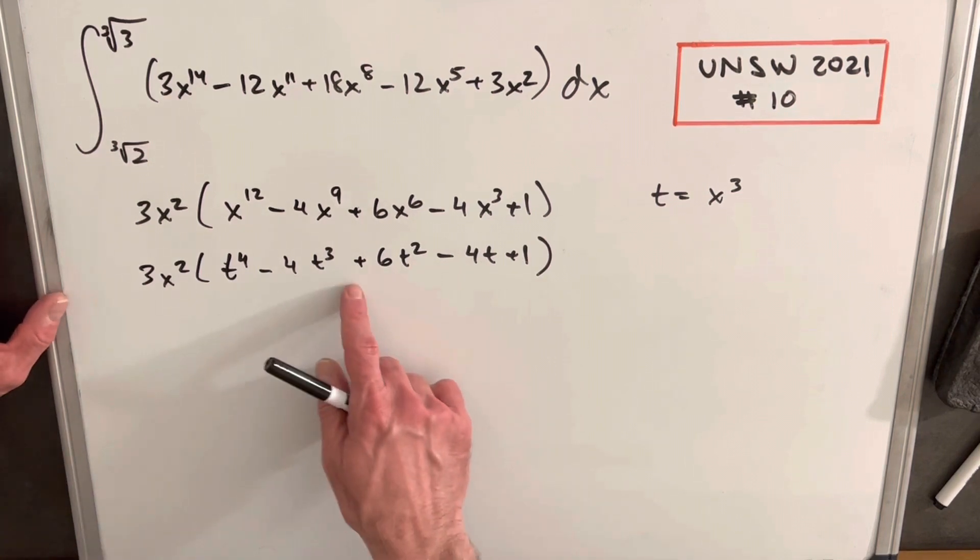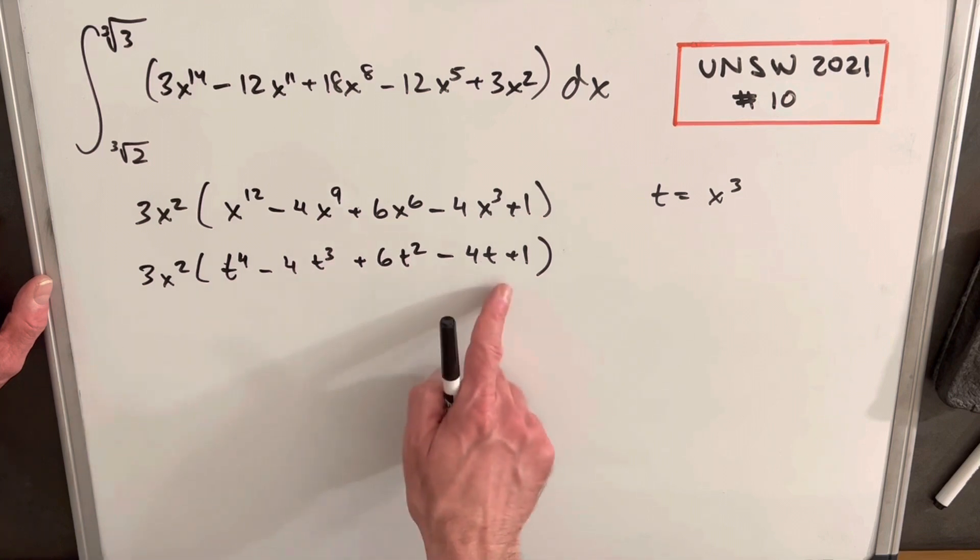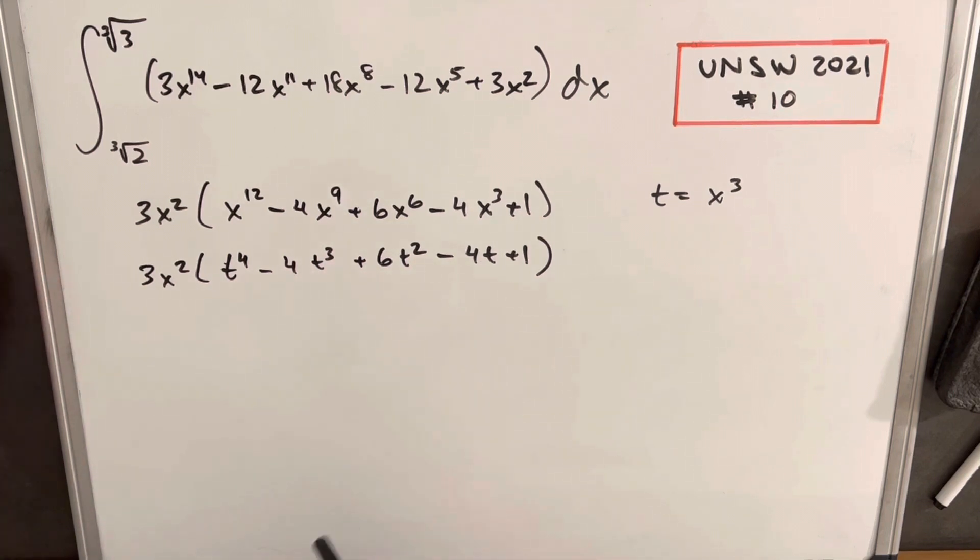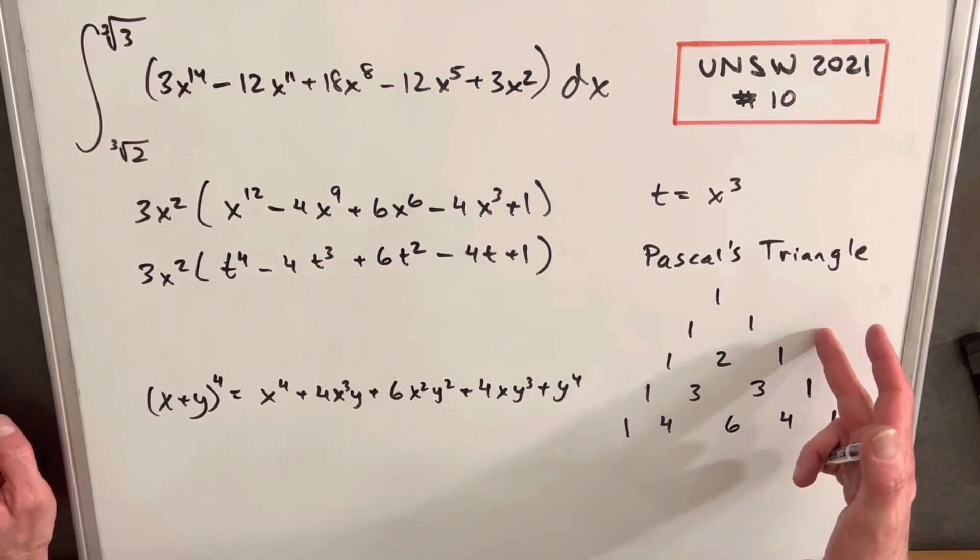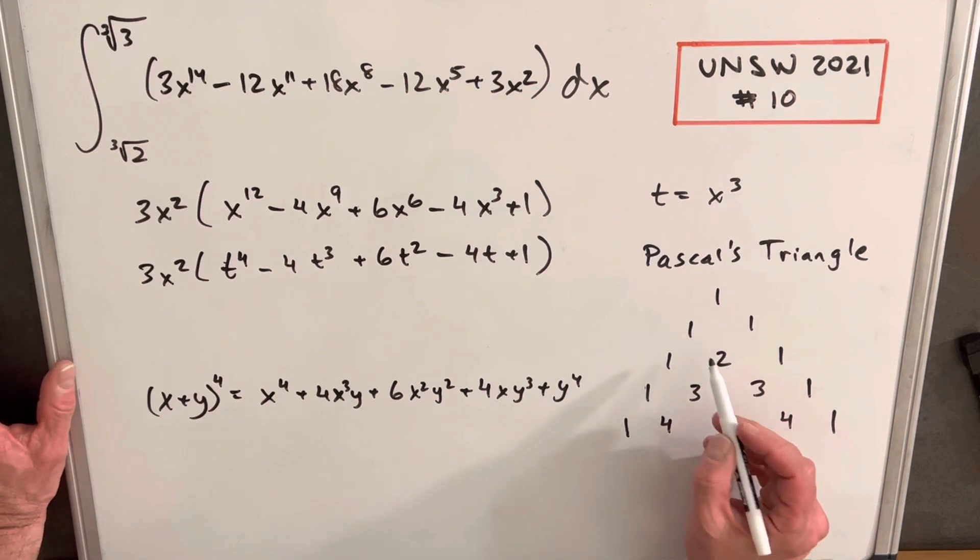And now just looking at the symmetry of this, we could actually factor this pretty easily. Also, you can kind of see that at 0, this would be 1, because all the coefficients add to 0. What I want to do instead is just look at Pascal's triangle for a moment.